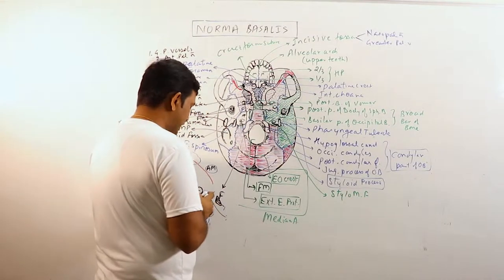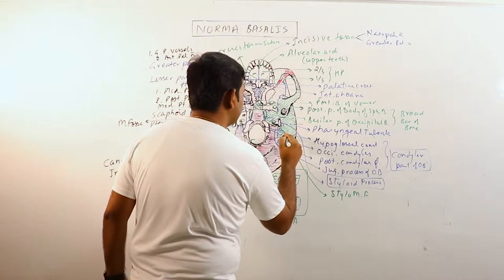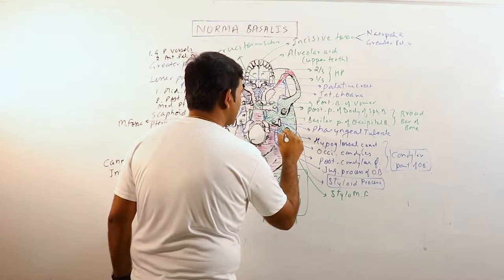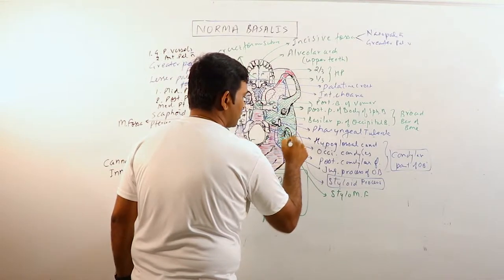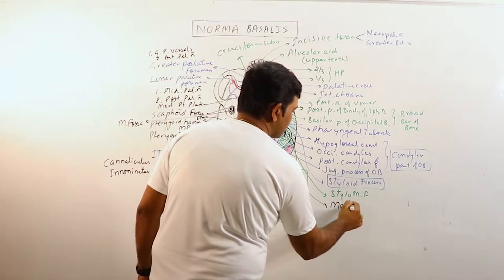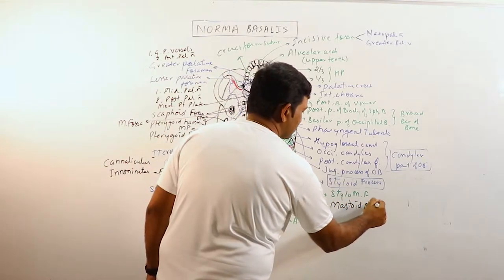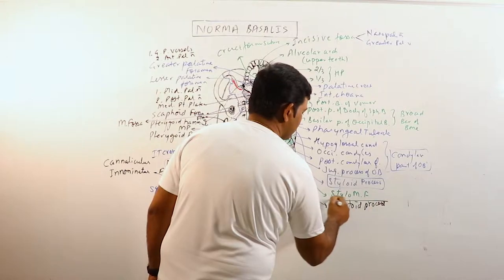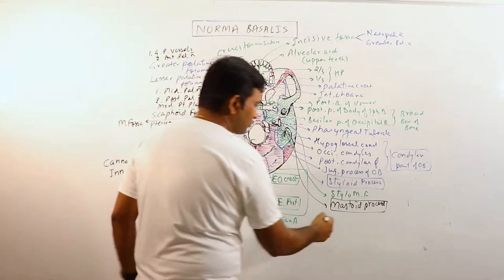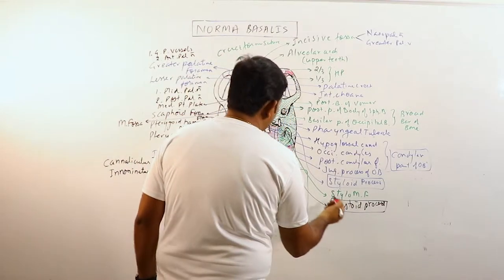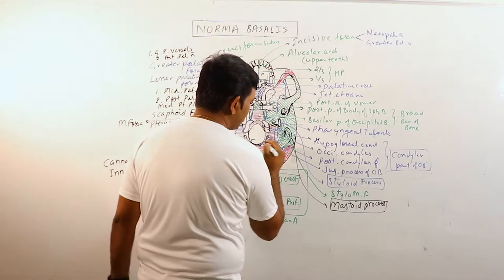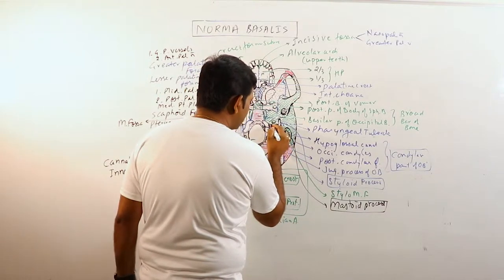We know that mastoid process is somewhere here. This is mastoid process. It is a conical projection which directs anteriorly, inwards and downwards, and it forms the lateral wall of mastoid notch.